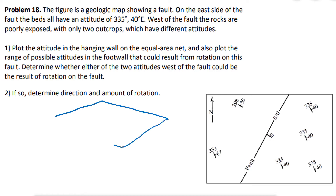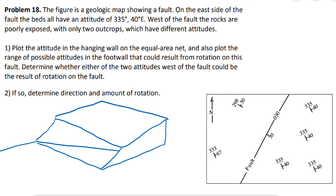I'm going to draw a rotated fault block. Let's say here I have a normal fault and the other block is going to be something like this. This is the fault plane — let me highlight it with a color. So this is my fault plane, and we have the hanging wall and we have the foot wall.